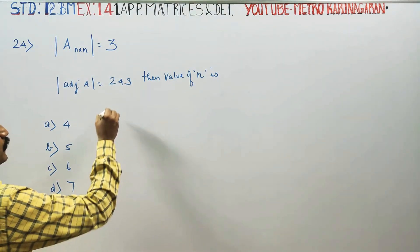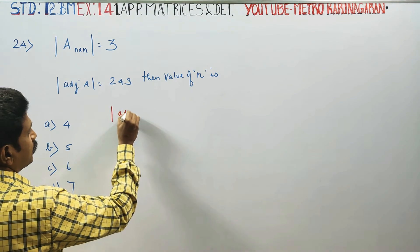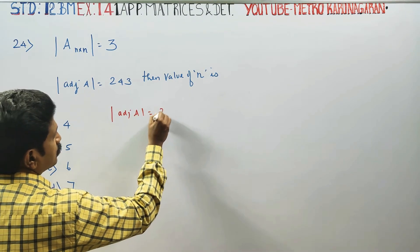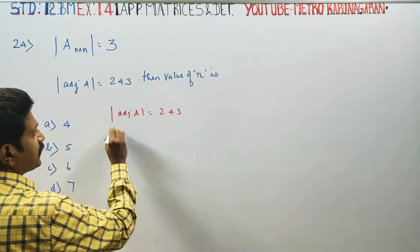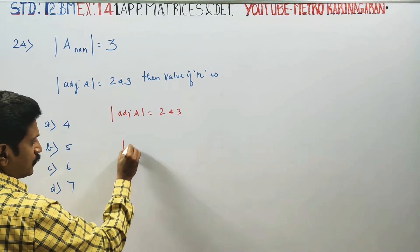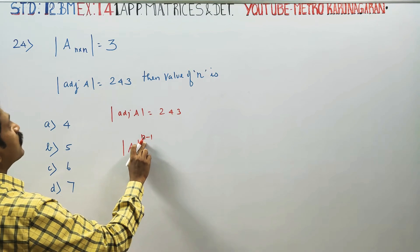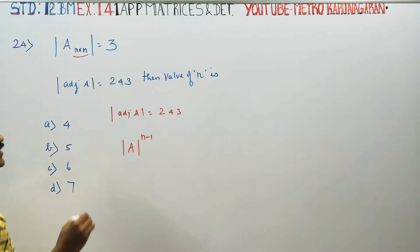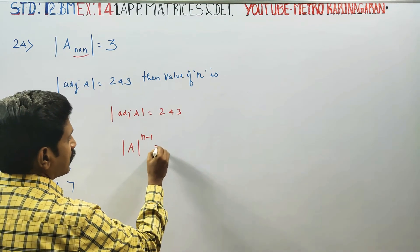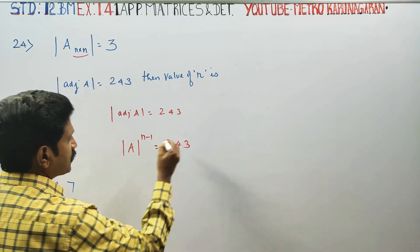determinant of adjoint A is equal to 243. Using the formula, determinant of adjoint A equals determinant of A to the power n-1, where n is the order of the n×n matrix. Therefore, determinant of A to the power n-1 equals 243.